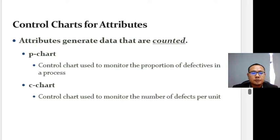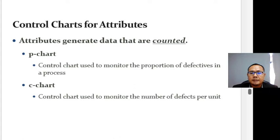Control charts for attributes are used when the process characteristic is counted rather than measured. For example, the number of defective items in a sample is counted, whereas the length of each item is measured. There are two types of attribute control charts: one for the fraction of defective items in a sample, and one for the number of defects per unit — the P chart and the C chart.